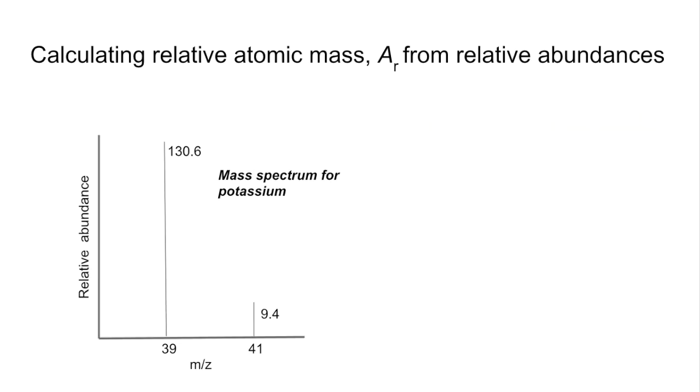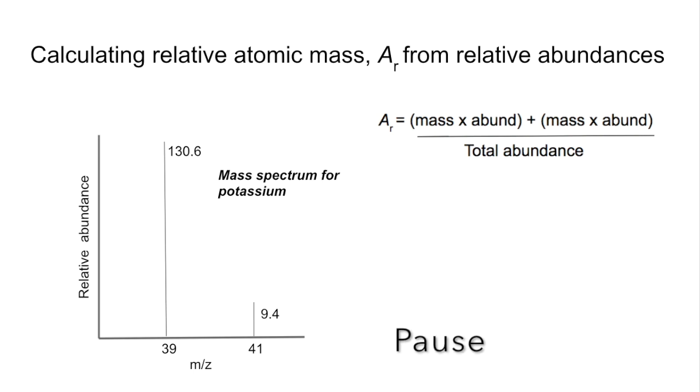Now, sometimes you might be given relative abundances, rather than percentage abundances. But nothing to worry about, it's exactly the same formula. We just do something slightly different, because the total abundance may or may not add up to 100 now. So if you want to pause the video, have a go at that one, and then play on when you're ready. So the numbers plug in like that, and the relative atomic mass comes out at 39.1.